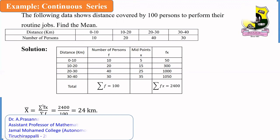The total fx is 2400, the total frequency is 100. So, 2400 divided by 100 is equal to 24. The distance in terms of kilometer, therefore, arithmetic mean is 24 kilometer.